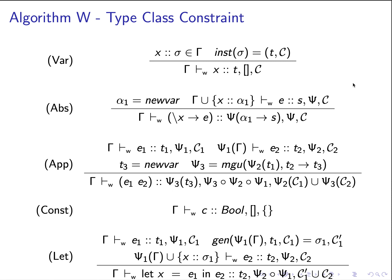The inference rules are almost exactly the same, except that now we have to keep track of the type class constraints at every single point in time.